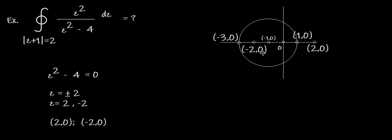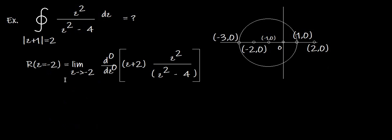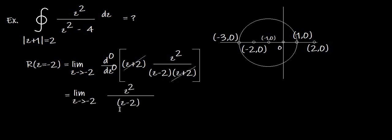We consider only z=−2 since it lies inside the circle. The residue at z=−2: limit z→−2, zero differentiations (simple pole), multiply by (z+2) and cancel with the factor from z²−4 = (z+2)(z−2). Applying the limit, we get (−2)²/(−2−2) = 4/(−4) = −1. So the residue is −1.